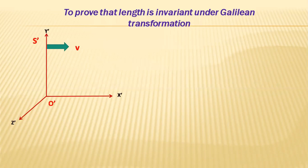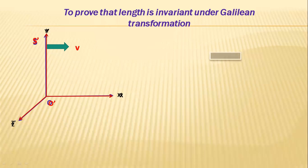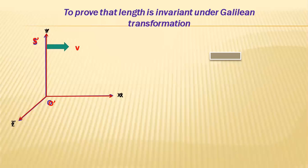Let us prove that length is invariant under Galilean transformation. Let us consider two frames of reference S and S'. Frame S is at rest and frame S' is moving at velocity v, but at time t = 0 the frames of reference S and S' coincide, that is observers O and O' are at the same point. Remember, both are inertial frames of reference.